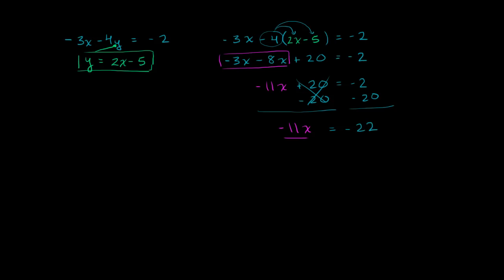Now we can divide both sides by negative 11. And we are left with x is equal to 22 divided by 11 is 2. And the negatives cancel out. x is equal to 2.